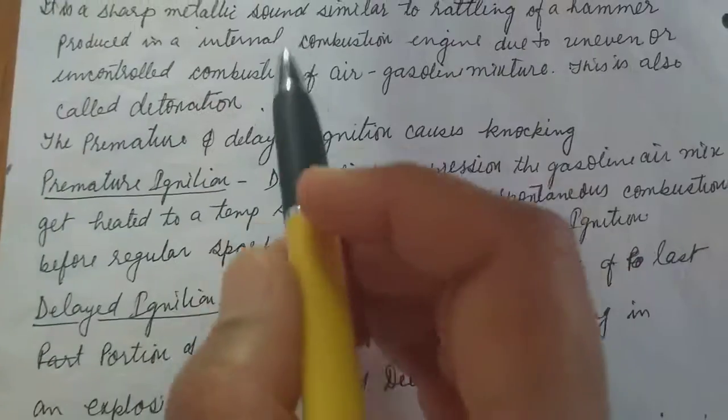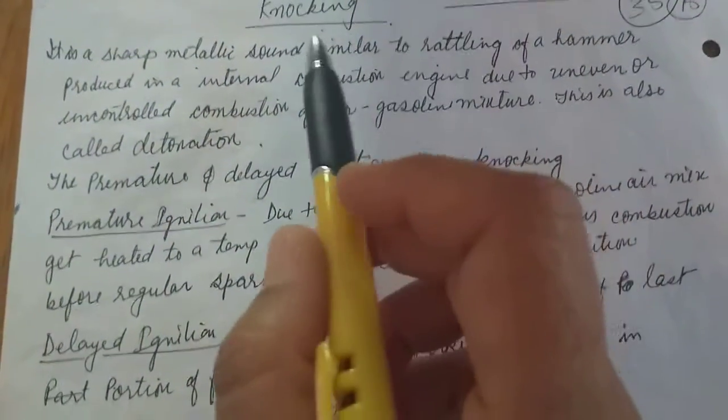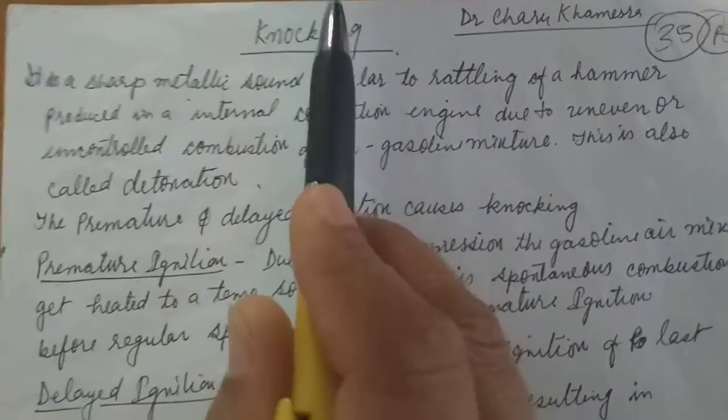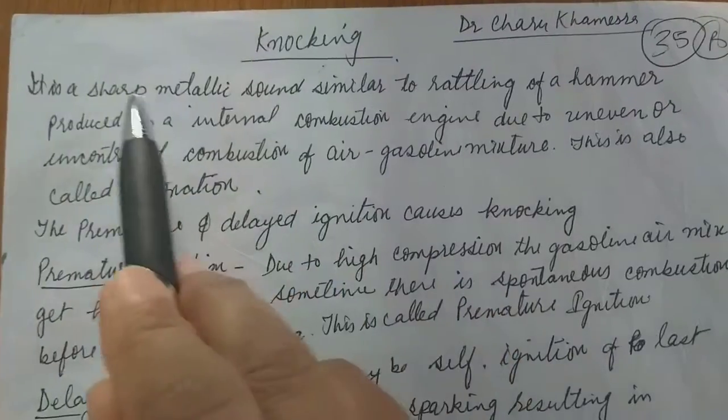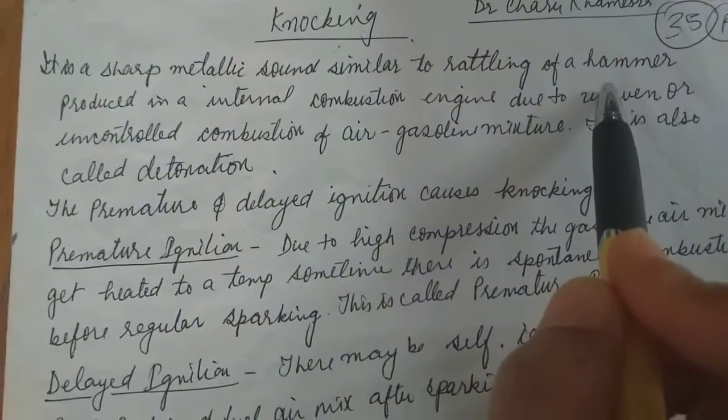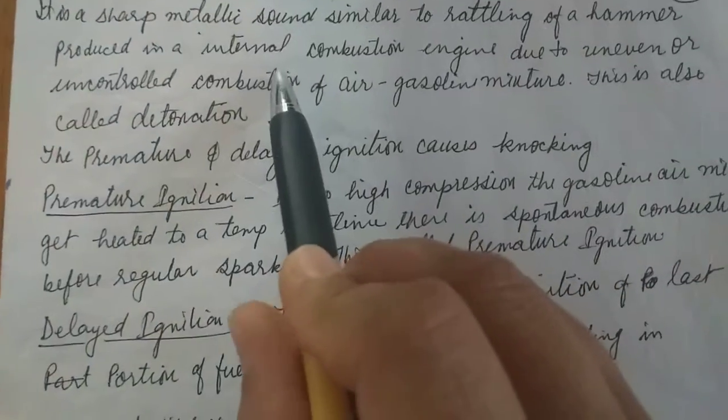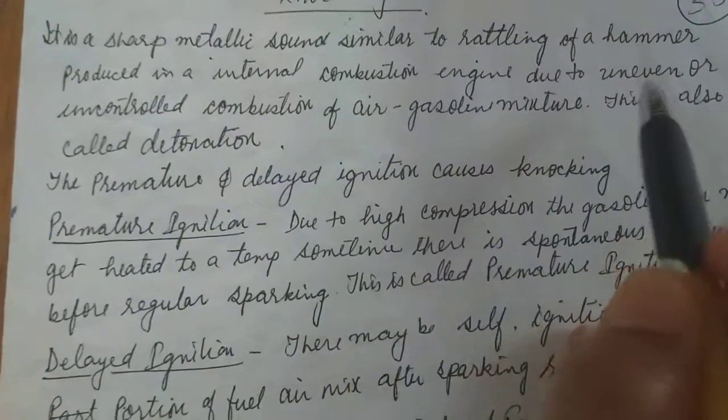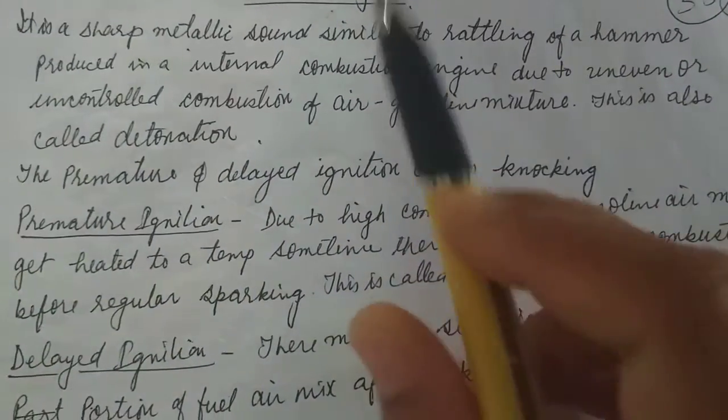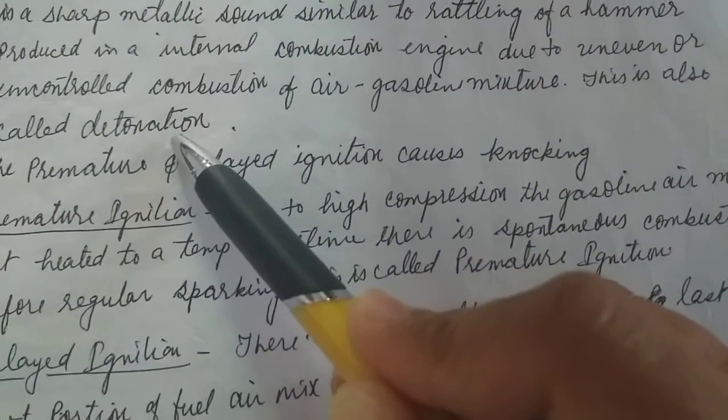Hello student, I am Dr. Charuka Mesra. Today we are going to complete the next topic: knocking. What is knocking? Knocking is a sharp metallic sound similar to rattling of a hammer, produced in an internal combustion engine due to uneven or uncontrolled combustion of fuel air mixture. This is also called detonation.